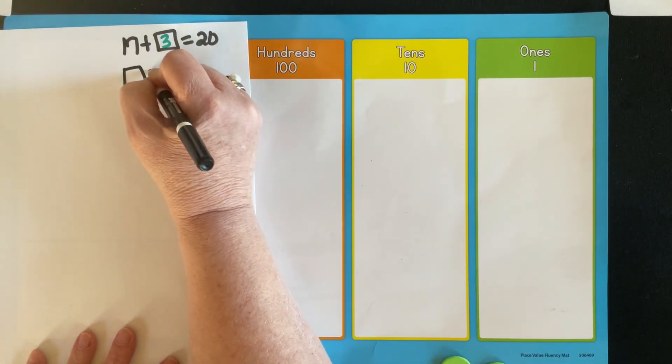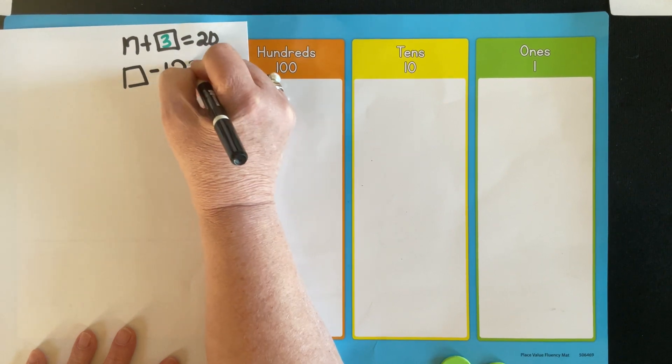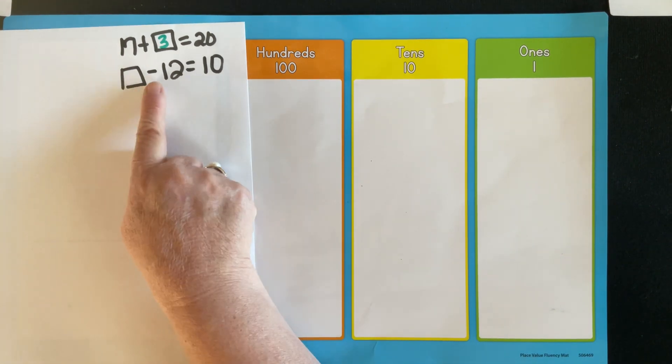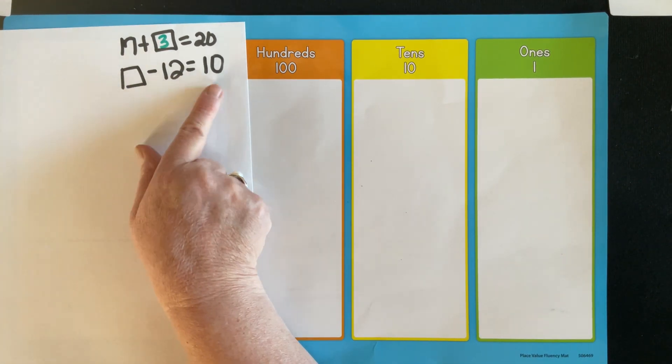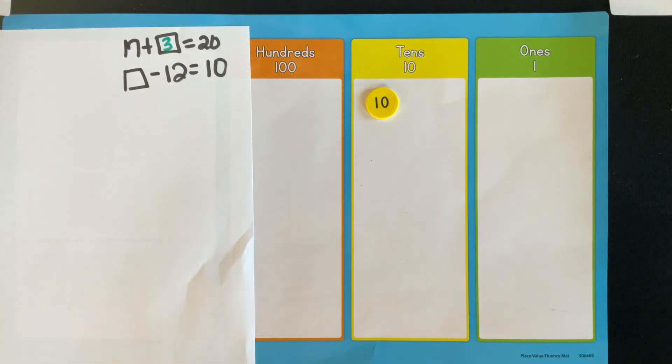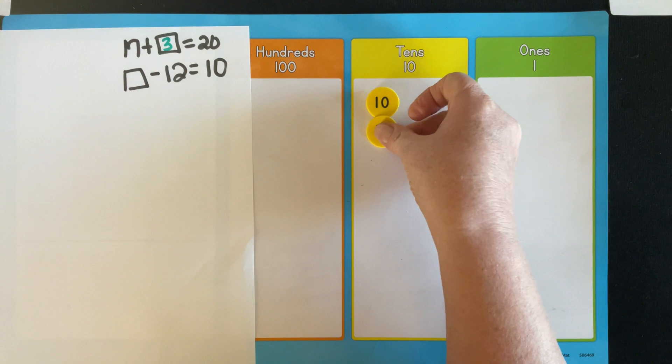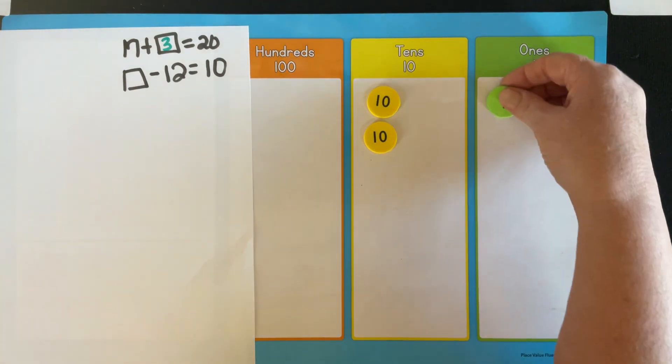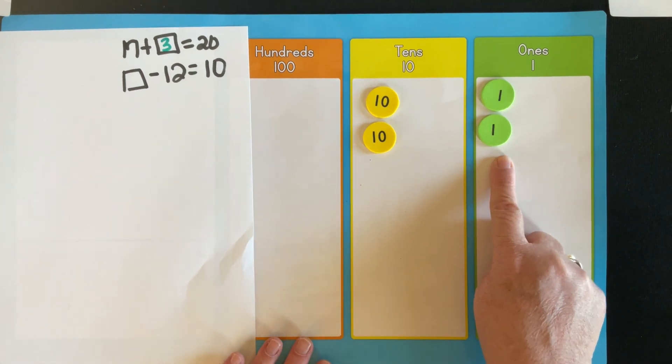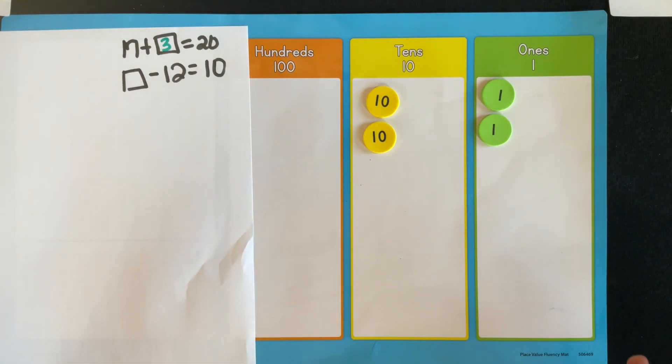Okay well what if we had this one? Because remember you can have any unknown also in a subtraction problem. So this one says what number would you start with, take away 12, but end up with 10? So here's what I'm trying to end up with 10. And pretend I'm taking away 12. Well in order to take away 12, there had to be 12 there for me to take away. And 12 is decomposed into a 10 and two ones, but that's decomposition by place value.